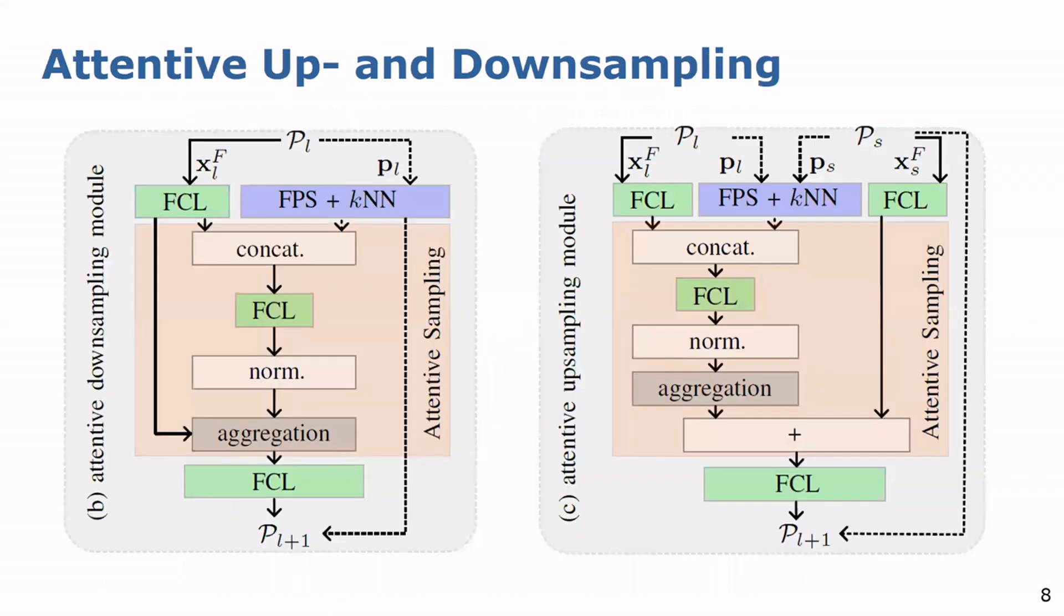Furthermore, we introduce an attentive up and down sampling module to adaptively combine local context information. The common down sampling method is max pooling. For the up sampling, the method is linear interpolation. However, max pooling reduces the information to one point, and interpolation can result in a combination of features of different classes, which can harm the extraction of discriminative features.